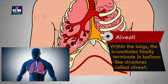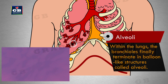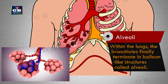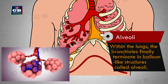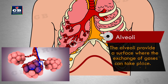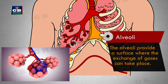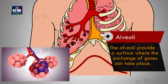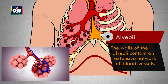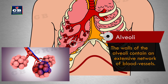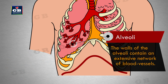Alveoli: within the lungs, the bronchioles finally terminate in balloon-like structures called alveoli. The alveoli provide a surface where the exchange of gases can take place. The walls of the alveoli contain an extensive network of blood vessels.